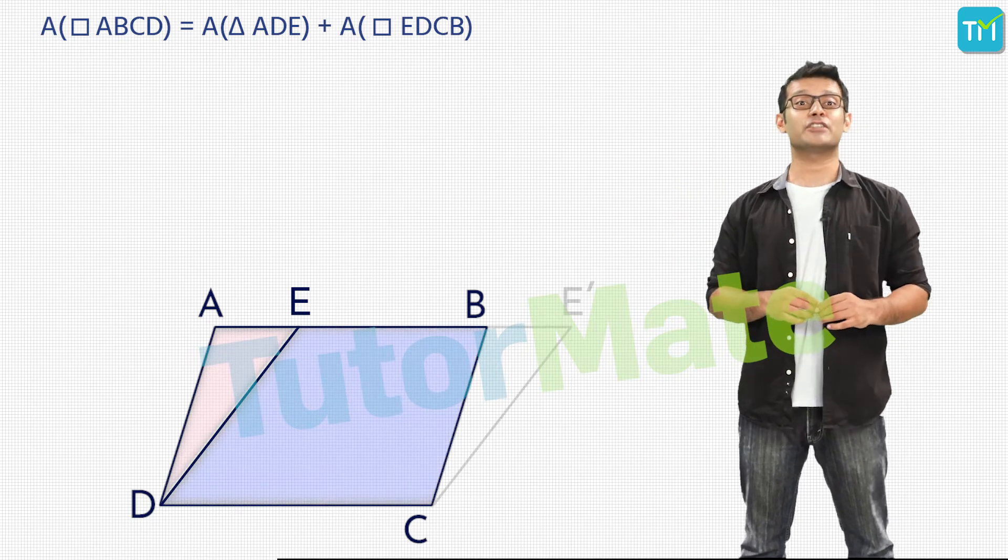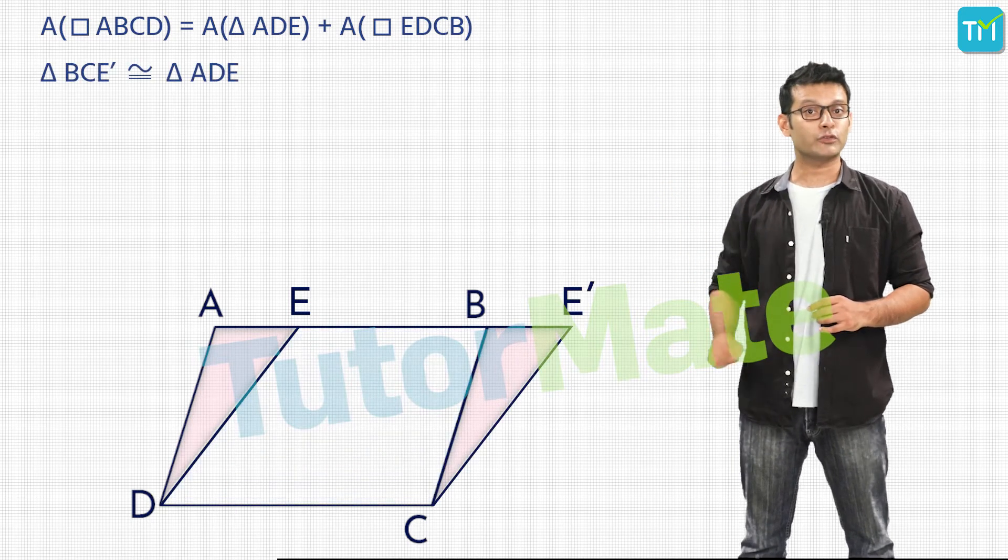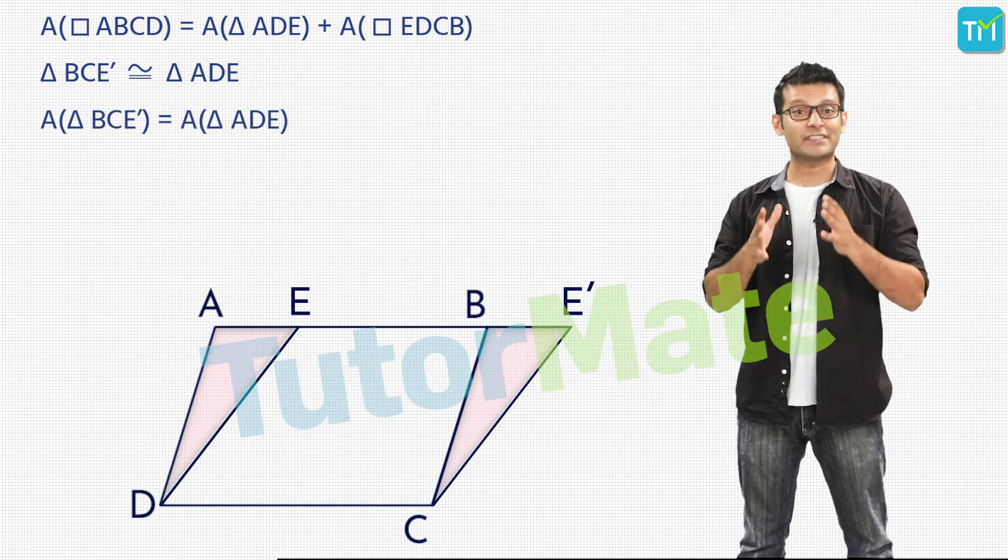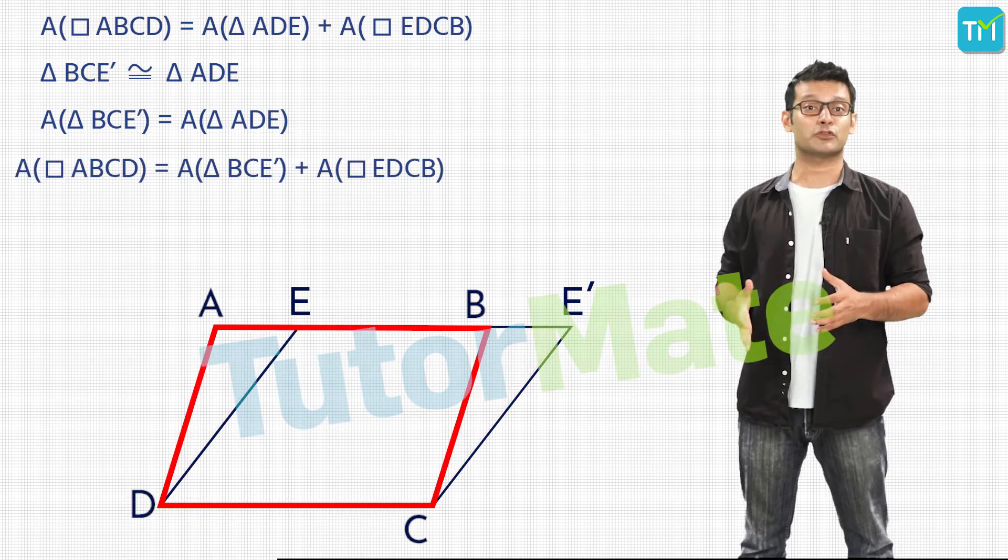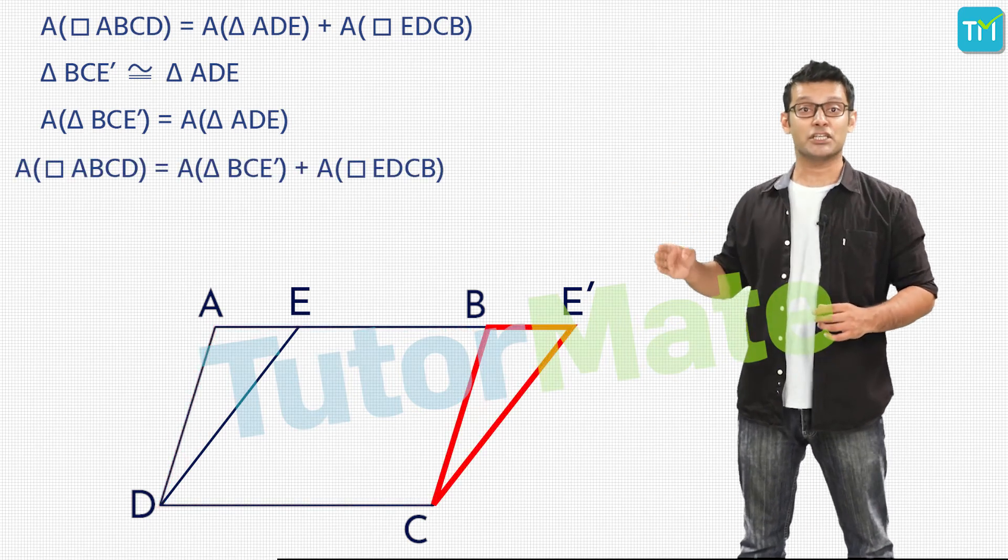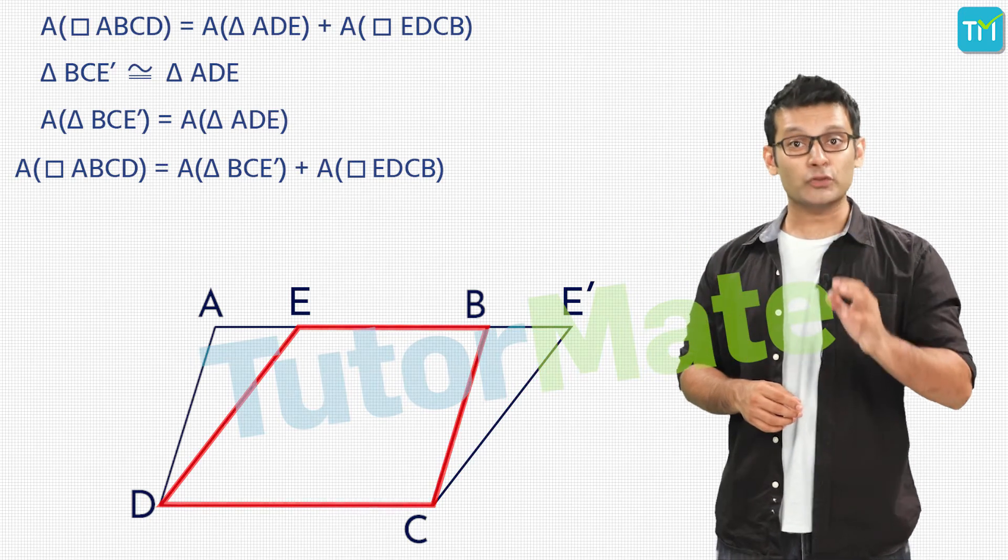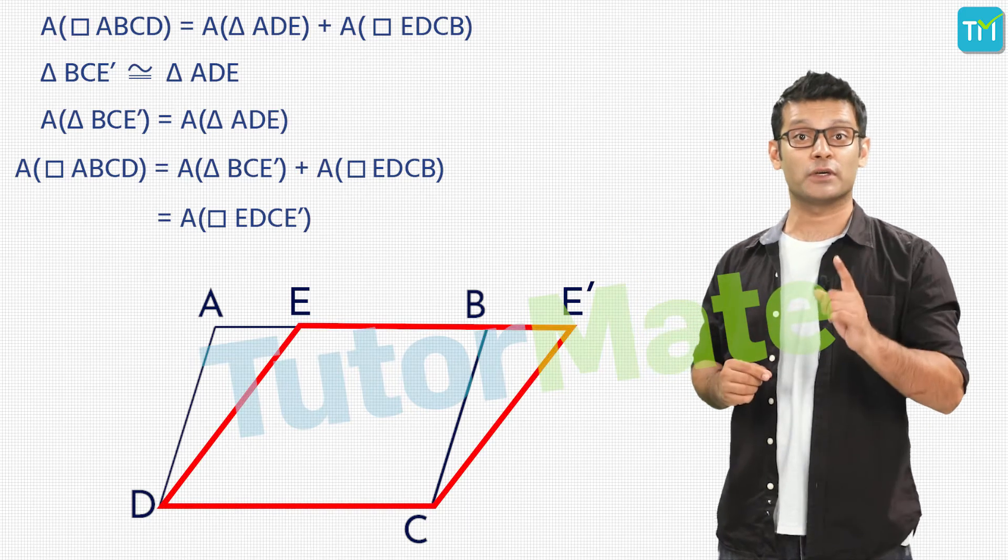We know that the area of ABCD is the sum of the areas of triangle ADE and quadrilateral EDCB. From the way we have created triangle BCE dash, we also know that it is congruent to triangle ADE and hence both the triangles have the same area. So we can rewrite the area of ABCD as area of triangle BCE dash plus the area of EDCB. This is also the area of the new parallelogram EDCE dash.